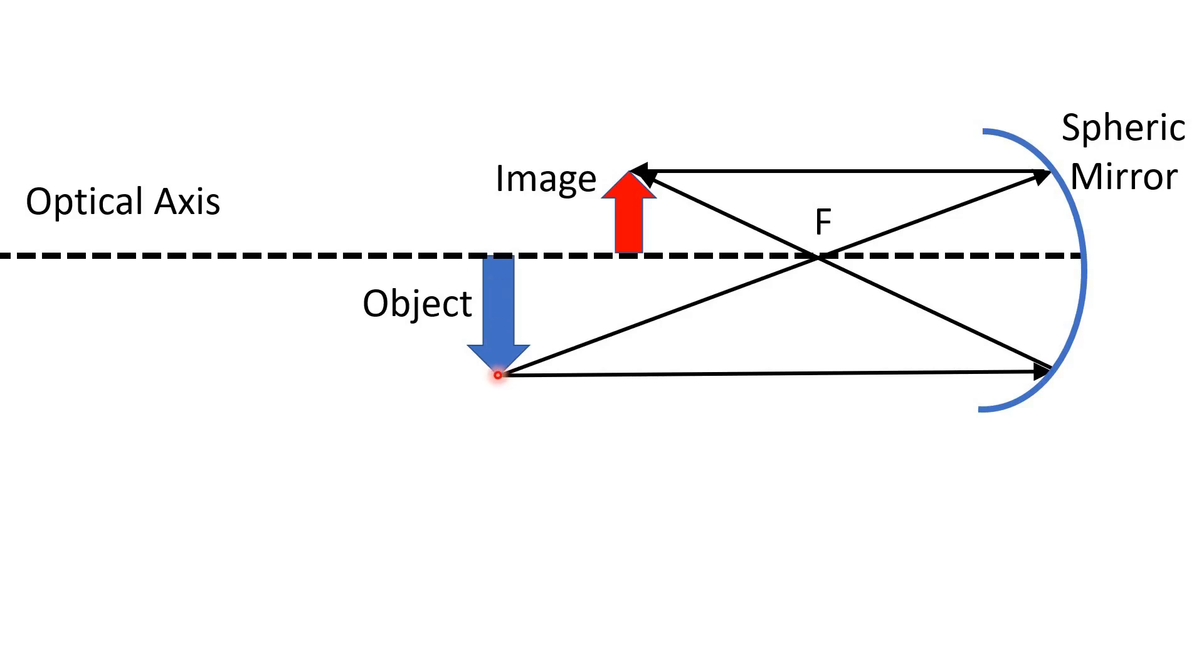So we take one ray that passes through the focus, goes to the mirror, and then it's parallel to the optical axis. Take another one that is parallel to the optical axis, and it's reflected. It passes through the focus.